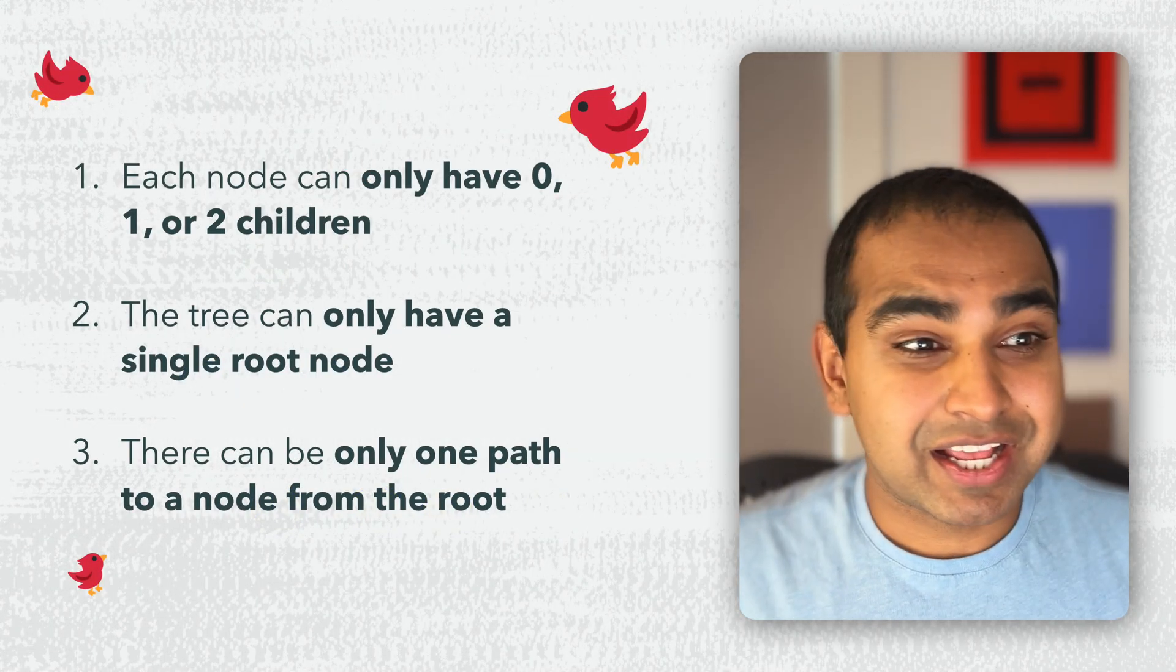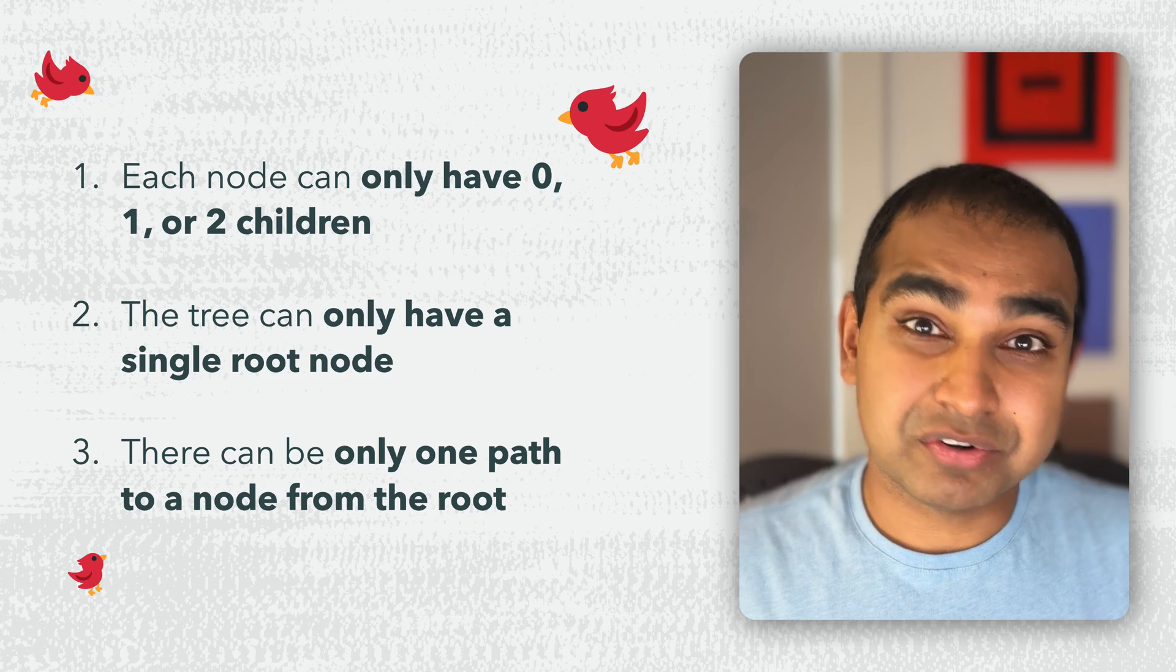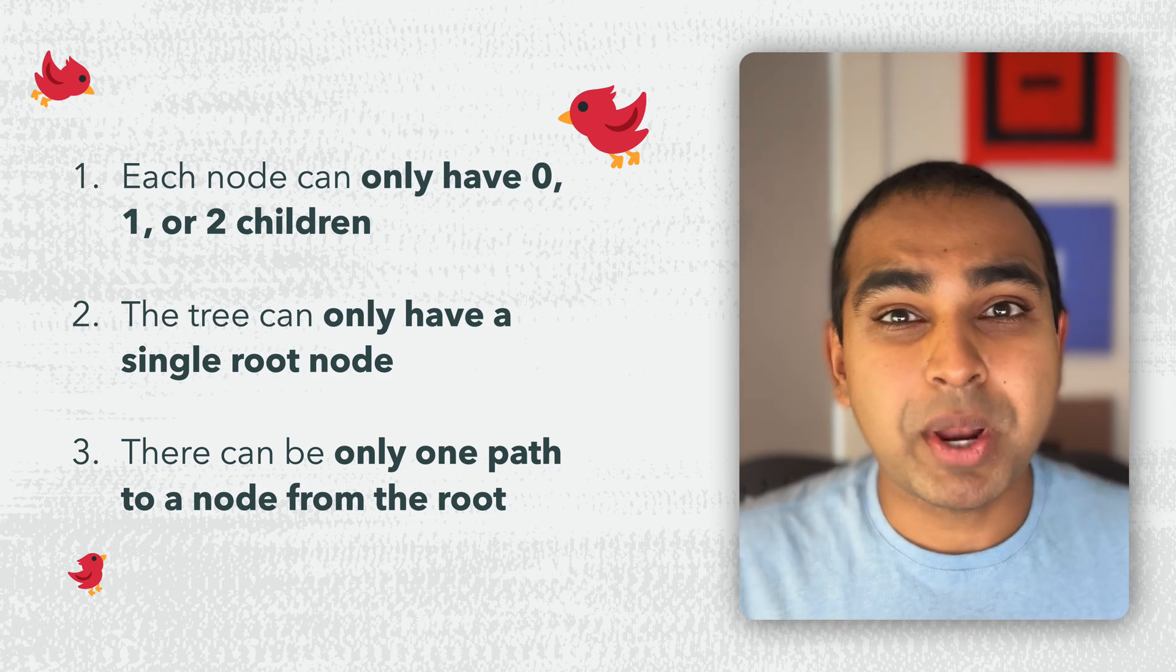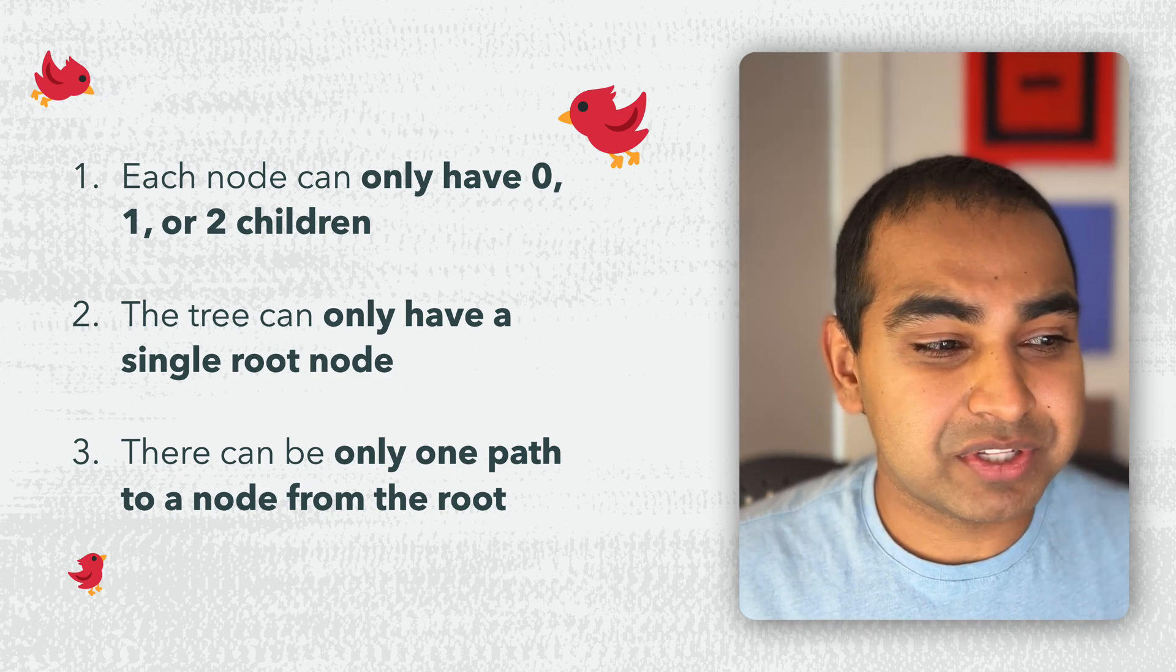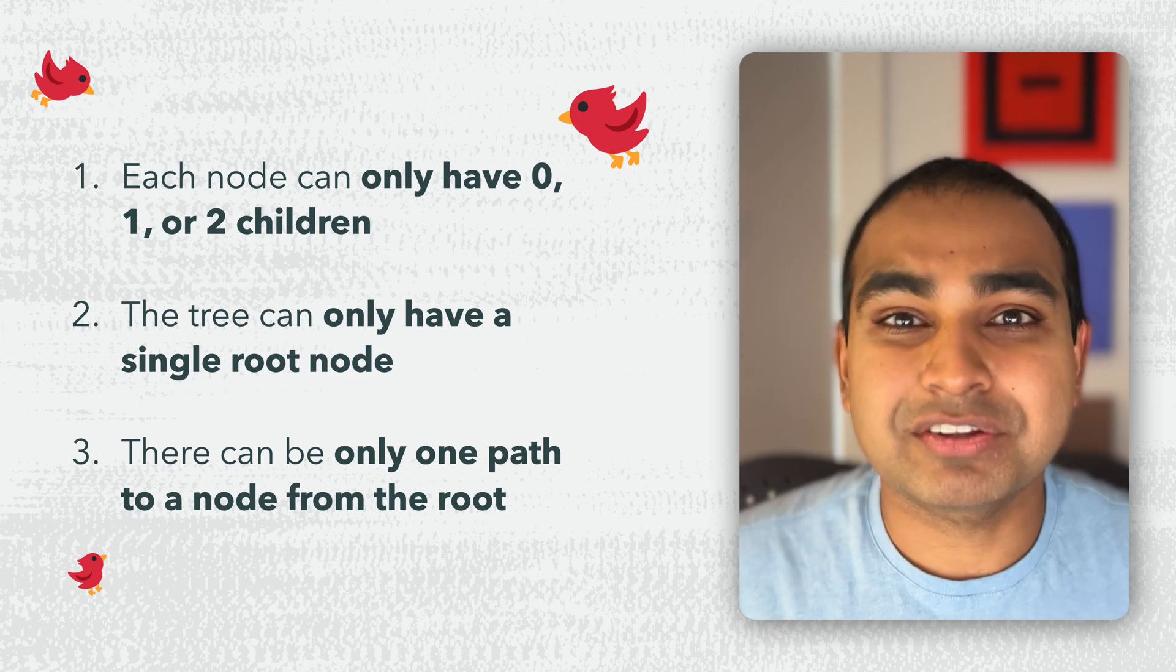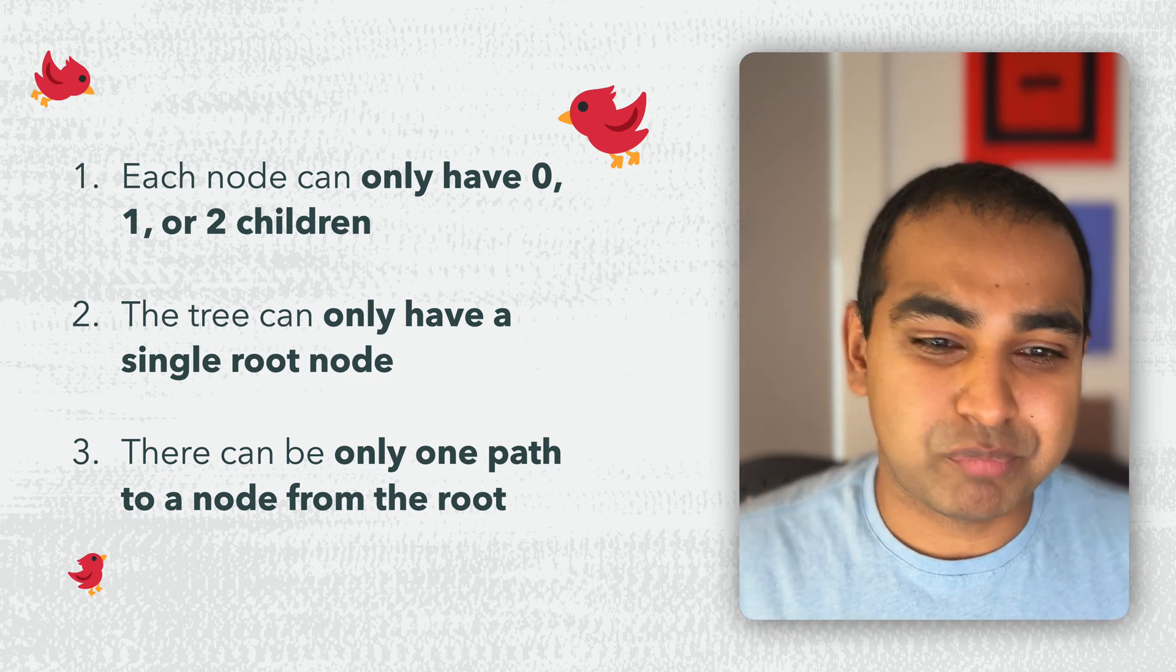Each node can have zero children, one child, or two children. The tree can only have a single root node, and there can be only one path from a node to a node from the root. So no multiple paths here. I will walk through what each of these rules look like in practice.